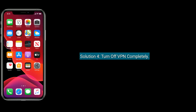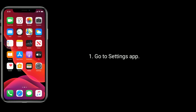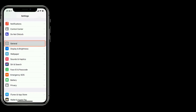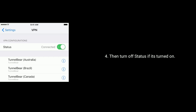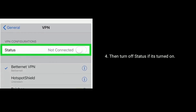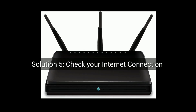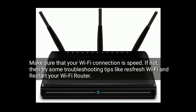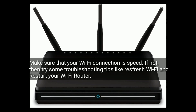Solution 4 is turn off VPN completely. Go to the Settings app, tap on General, find and tap on VPN, and turn off the status if it is turned on. Solution 5 is check your internet connection. Make sure your Wi-Fi connection is fast. If not, try some troubleshooting tips like refreshing Wi-Fi and restarting your Wi-Fi router.